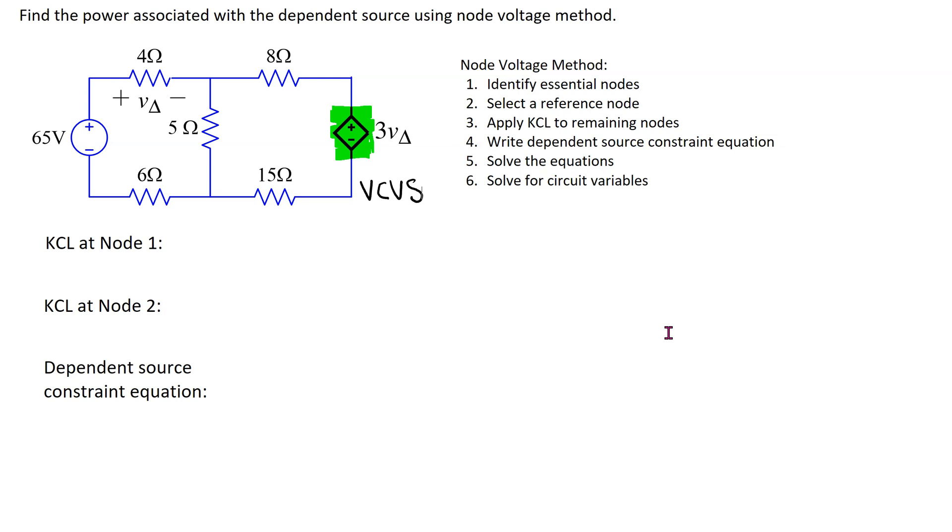First, we need to identify essential nodes. This is where three or more circuit elements join together and this circuit has two essential nodes which are indicated here. Note that this point, this point, this point and this point is an ordinary node because two circuit elements meet but it is not an essential node.